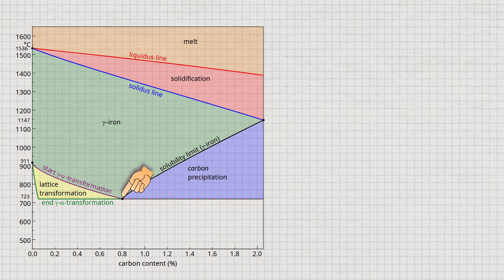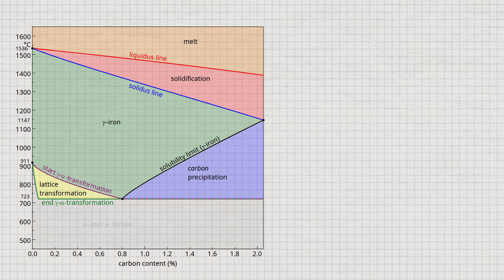At higher concentrations, the gamma-alpha transformation takes place at a constant temperature of 723 degrees Celsius. Below this temperature, alpha-iron and carbon are present in the microstructure of a steel. We will clarify later in more detail in which form the carbon is contained in the microstructure.